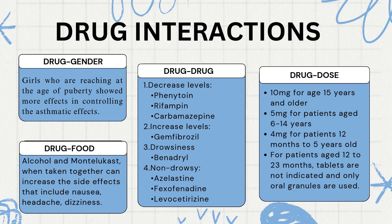Drug Interactions: 1. Drug-Gender Interactions: Girls reaching the age of puberty showed more effects in controlling asthma. 2. Drug-Food Interactions: Alcohol and Montelukast, when taken together, can increase the side effects. 3. Drug-Drug Interactions: Some medications affect the elimination of Montelukast from the body. Drugs which decrease the levels of Montelukast include phenytoin, rifampin, and carbamazepine. Gemfibrozil increases these levels. Benadryl can cause drowsiness if taken along with Montelukast. Some medications may produce non-drowsy effects if taken with Montelukast, such as azelastine, fexofenadine, and levocetirizine.